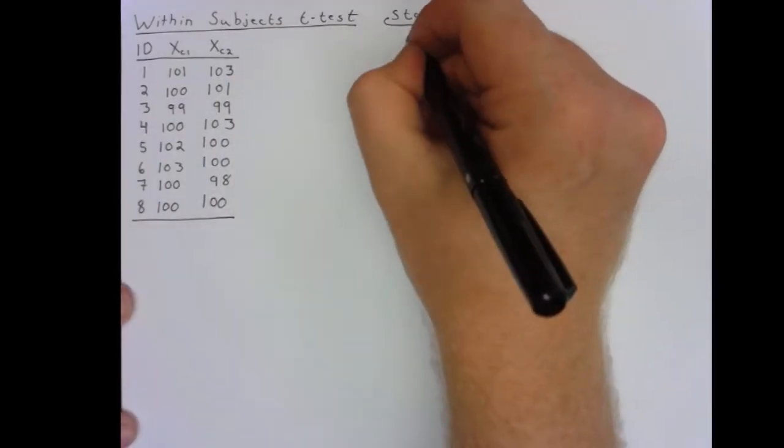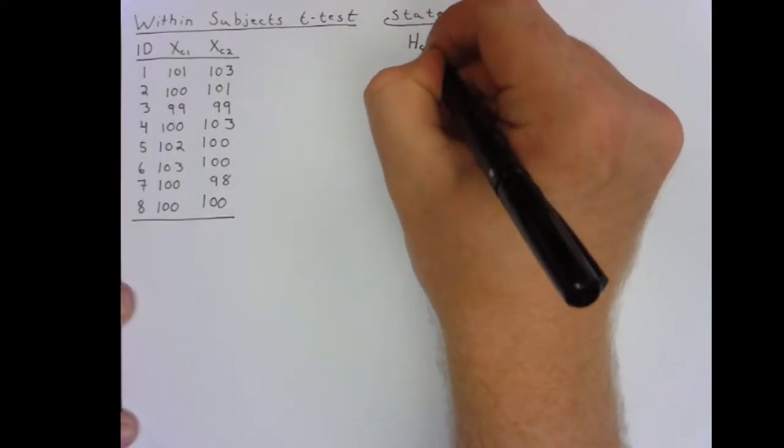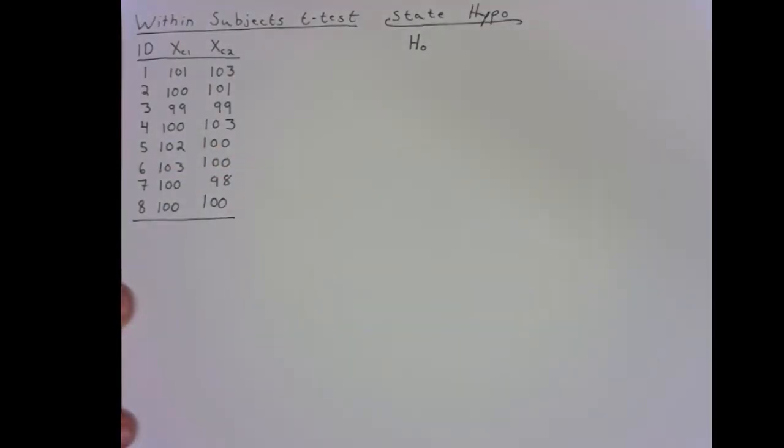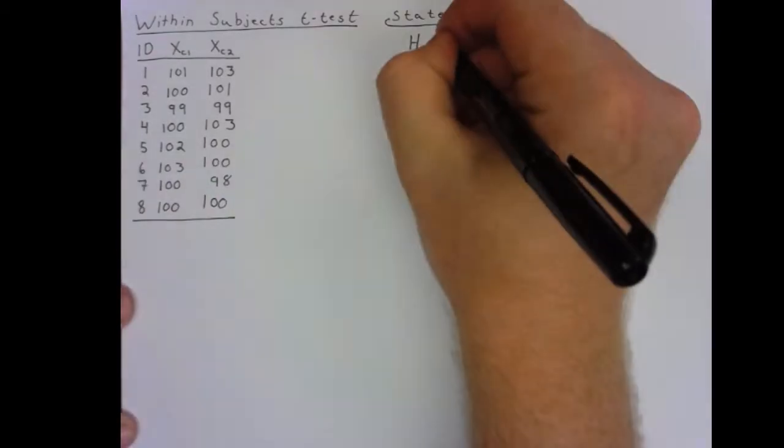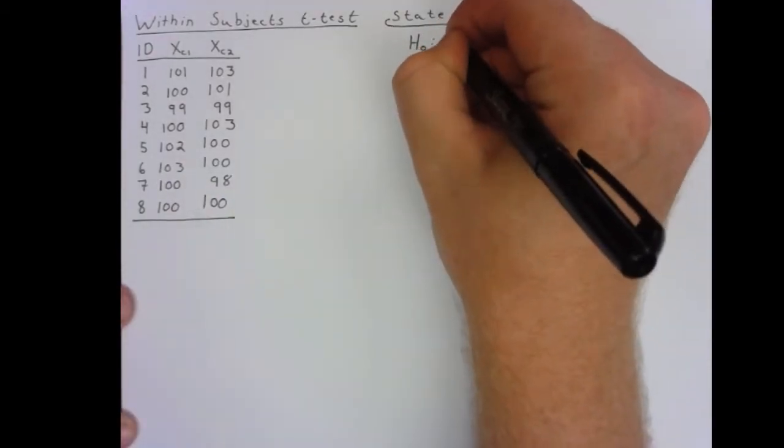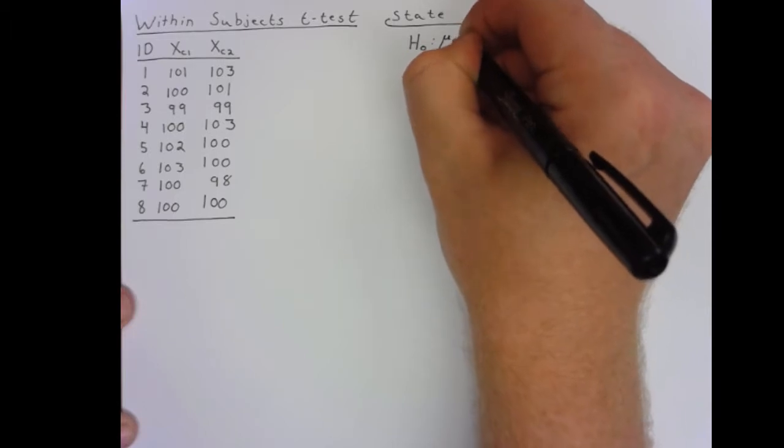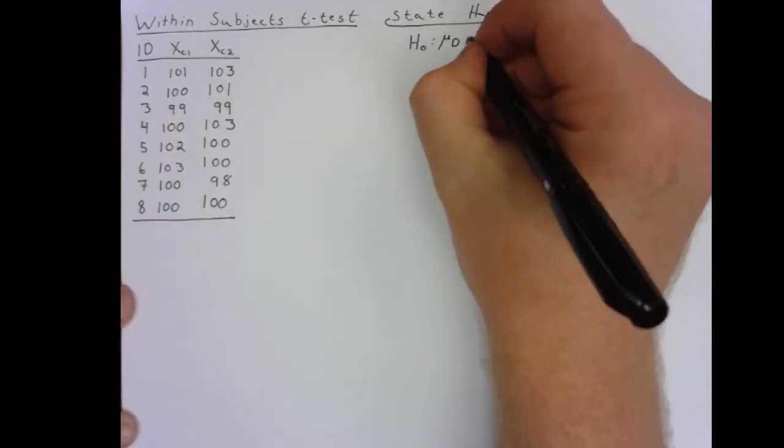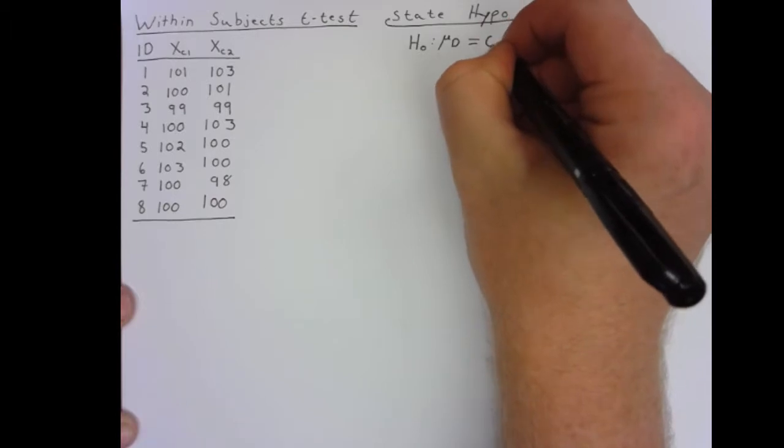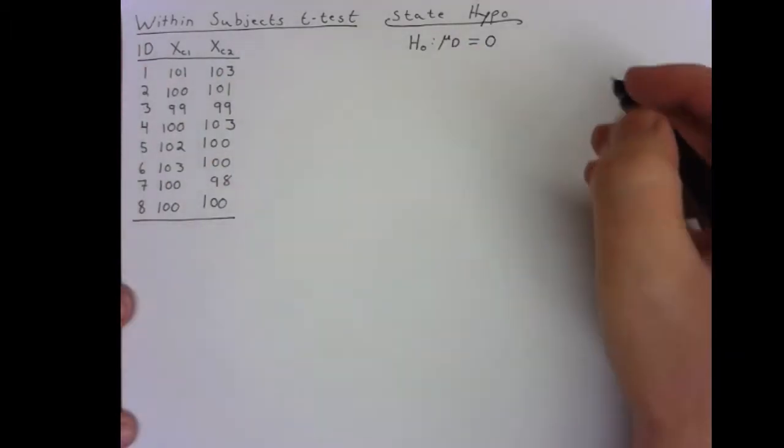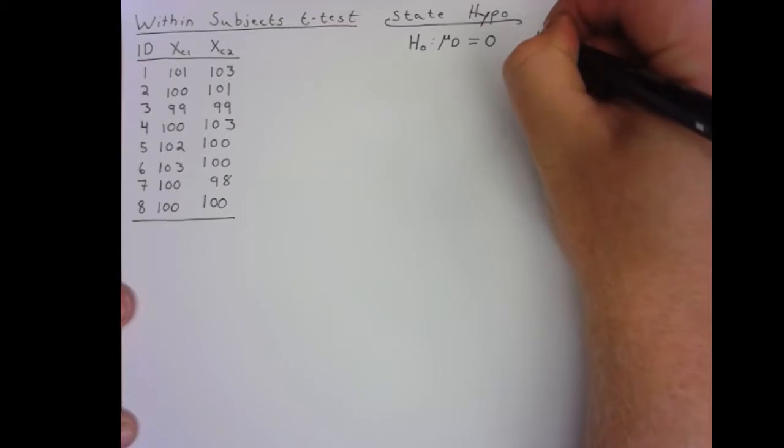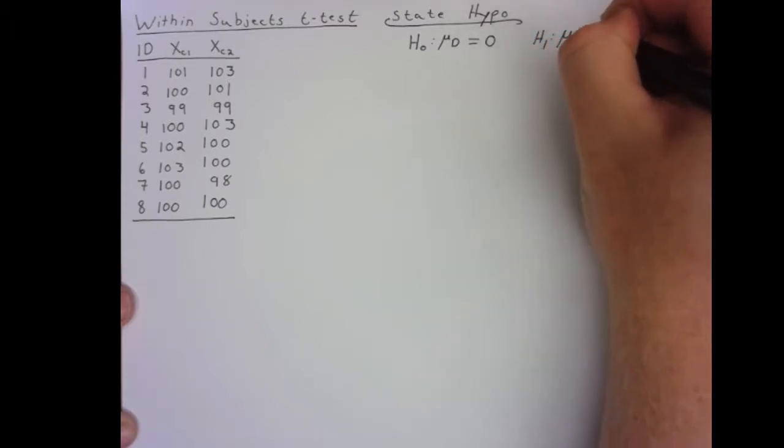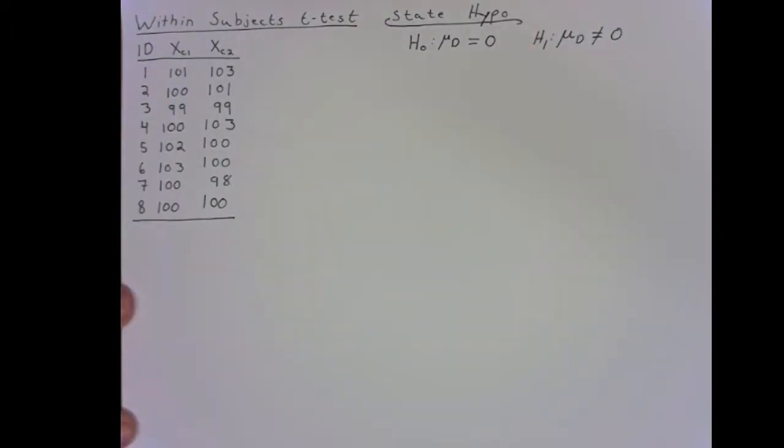Specifically your null hypothesis, which for a within-subjects t-test essentially states that everything that you're seeing is due to random chance and that the population mean of the population of difference scores is equal to zero. And it's mutually exclusive and exhaustive alternative hypothesis that the mean of the population of difference scores is not equal to zero.